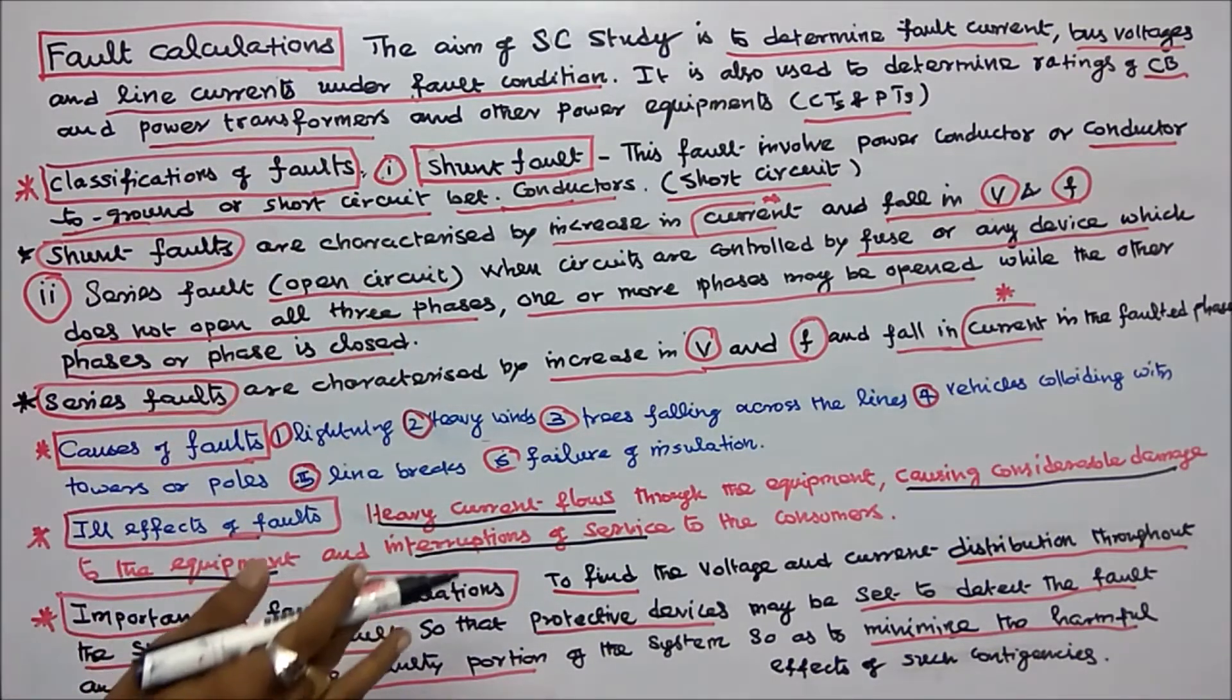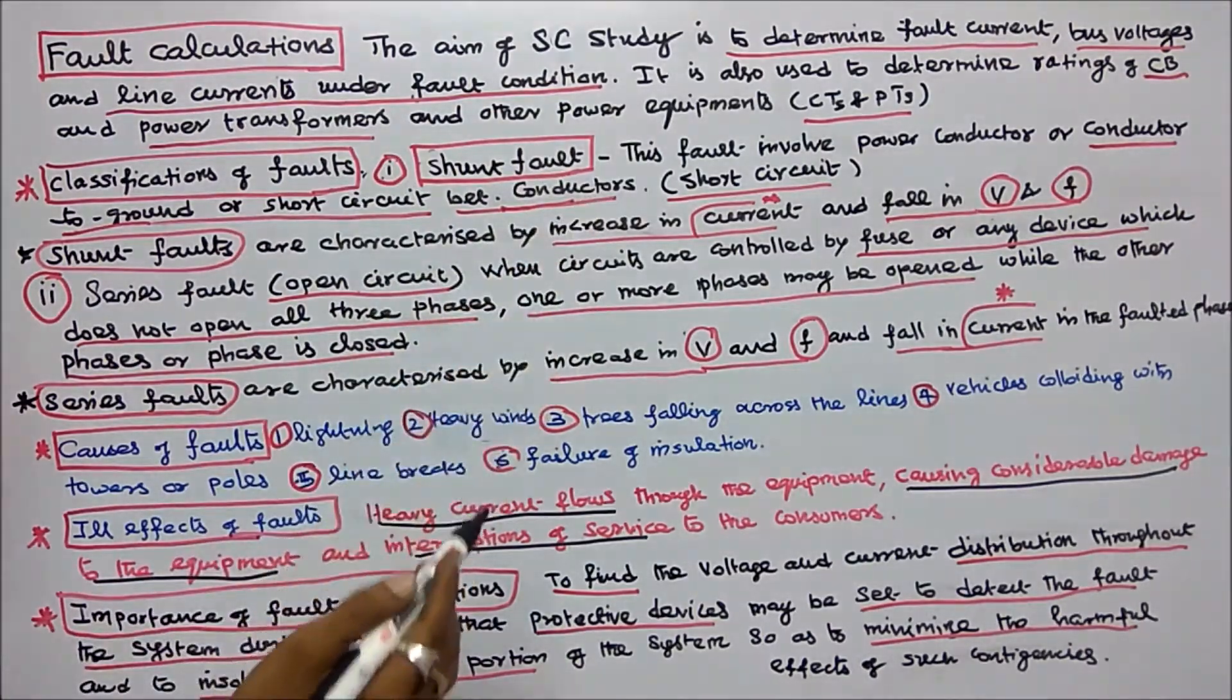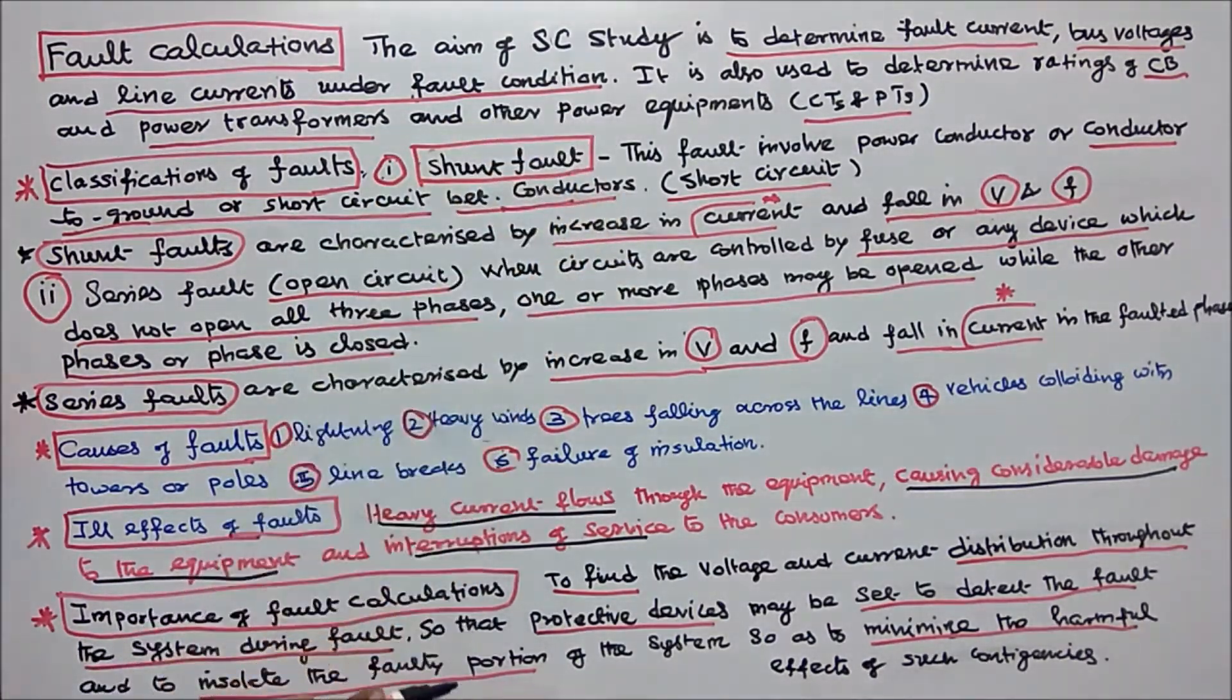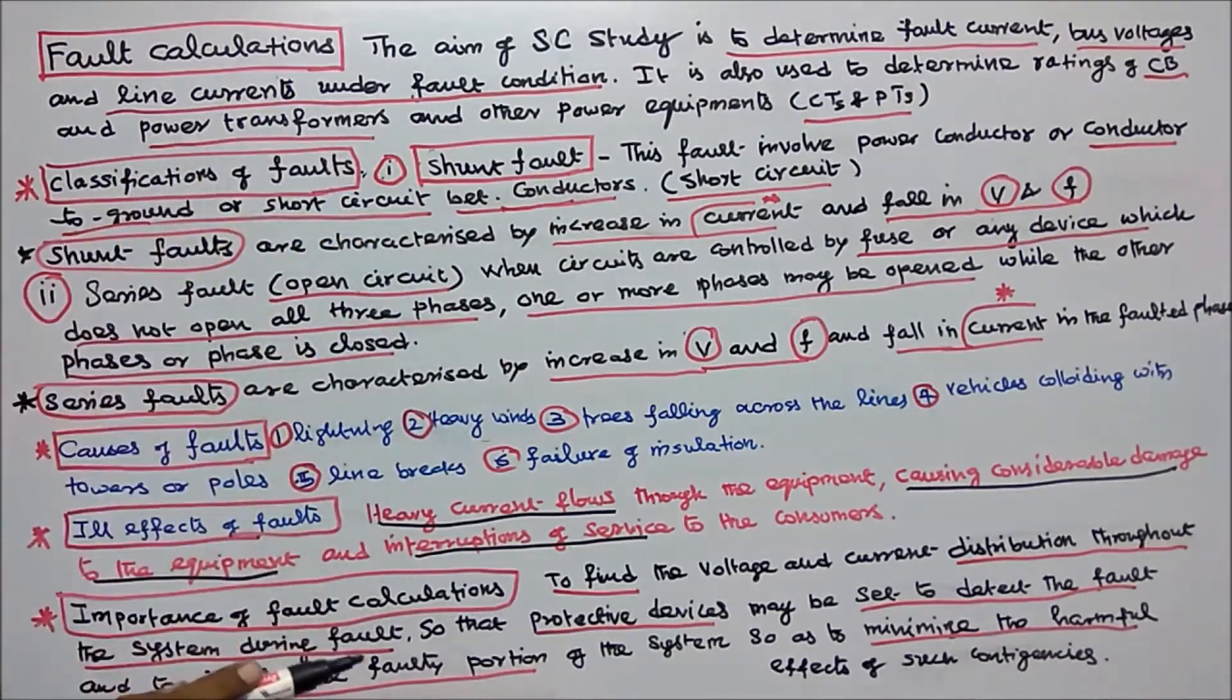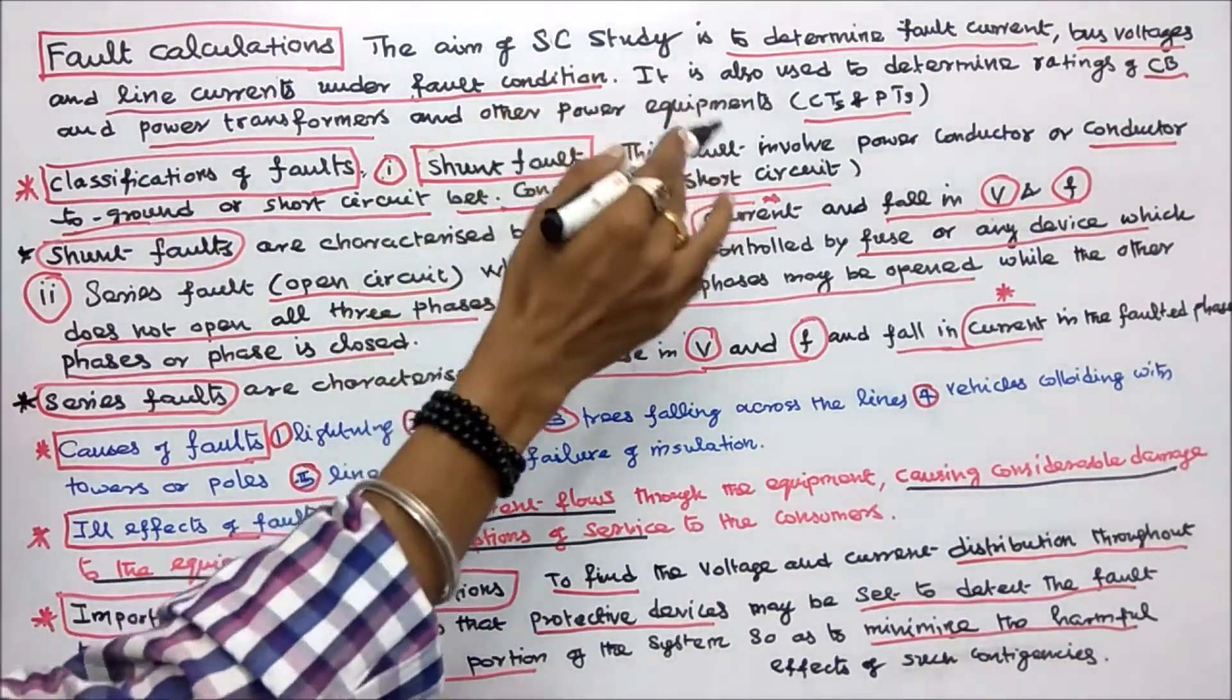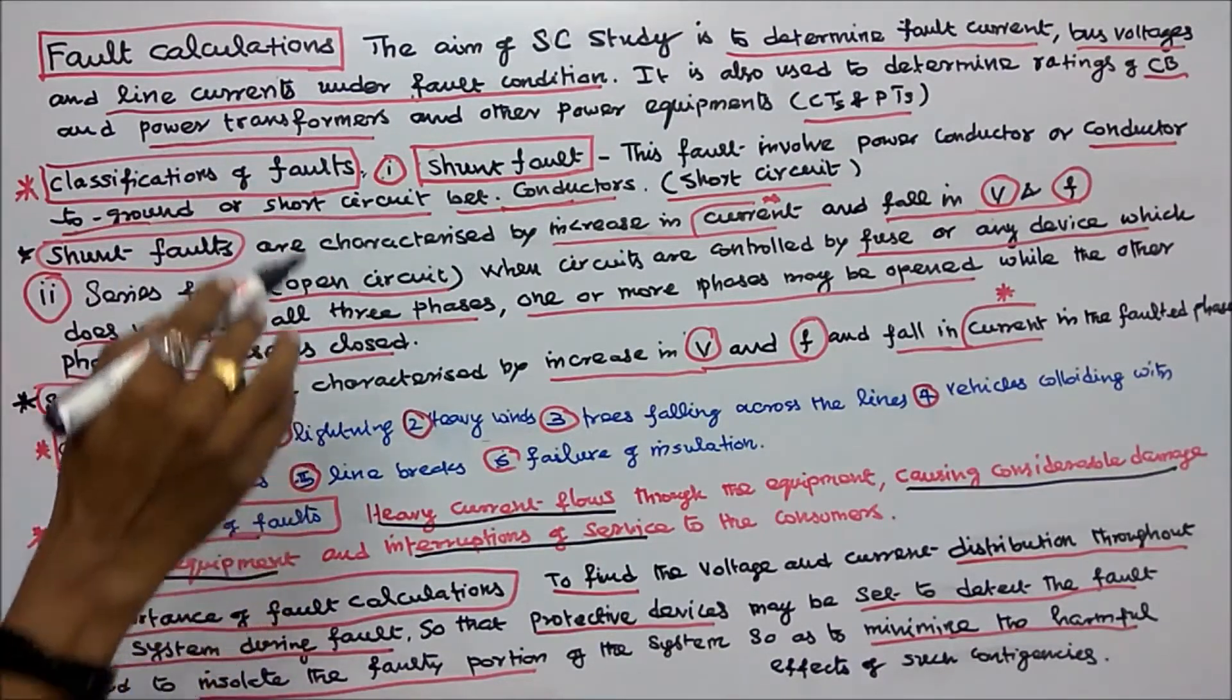In this class we discuss fault calculations. The aim of short circuit study is to determine fault current, bus voltages, and line currents under fault condition. It is also used to determine ratings of circuit breakers, power transformers, and other power equipment, current transformers, and potential transformers.